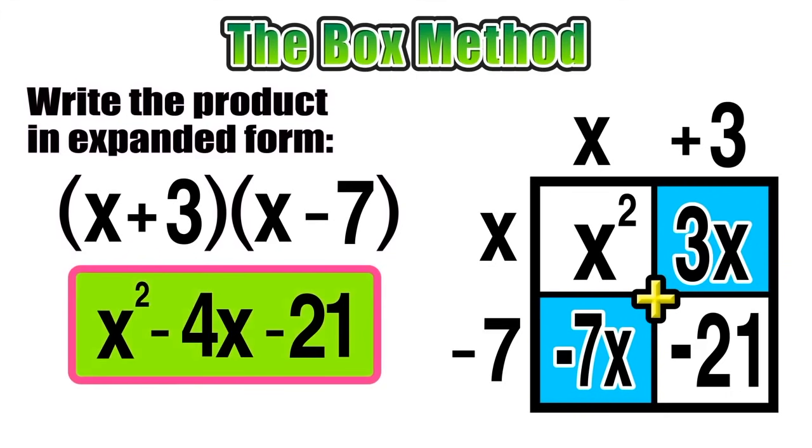Now we are left with a trinomial: x squared minus 4x minus 21 represents the expanded form version of the product of x plus 3 and x minus 7.